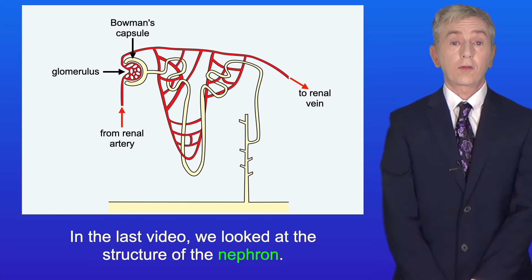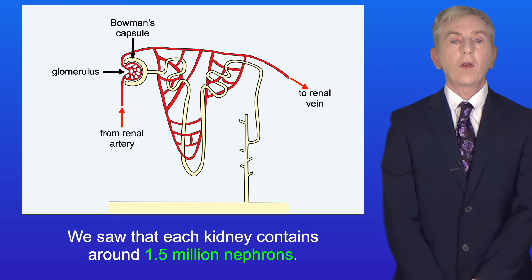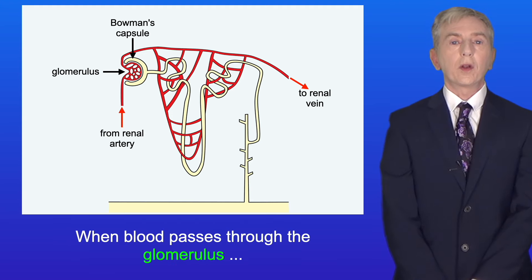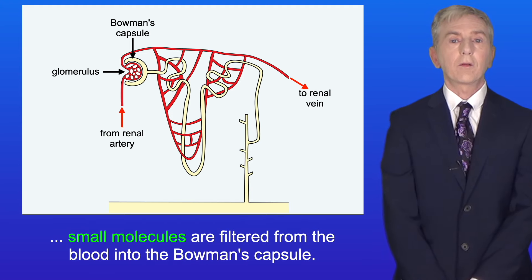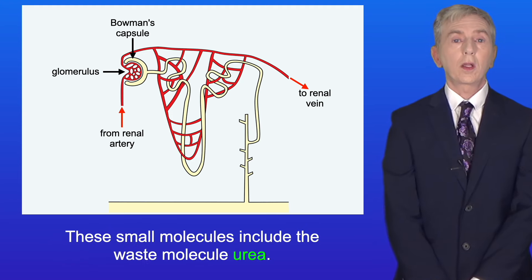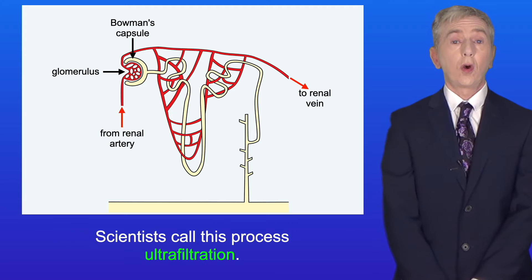In the last video we looked at the structure of the nephron. We saw that each kidney contains around 1.5 million nephrons. When blood passes through the glomerulus, small molecules are filtered from the blood into the Bowman's capsule. These small molecules include the waste molecule urea. Scientists call this process ultrafiltration.